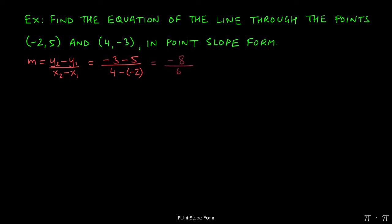Distributing the negative and combining the numerator, we get negative 3 minus 5 as negative 8. Negative times a negative is positive, so 4 plus 2 gives us 6. This fraction can be reduced to negative 4 thirds, which is our slope.